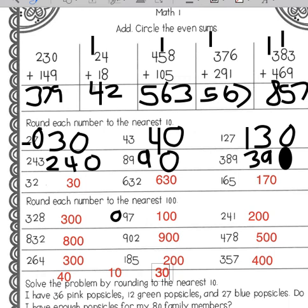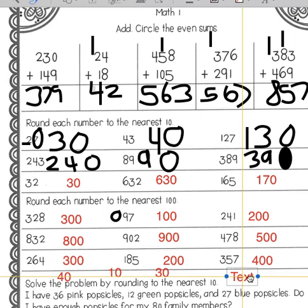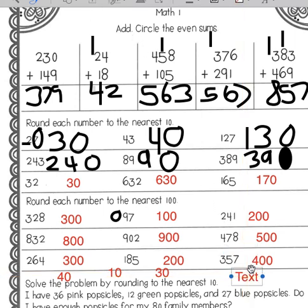It wants to know if we have enough for 80 family members, so I need to add this up. Forty plus ten would be fifty, fifty plus thirty would be eighty. So I would have exactly enough for my 80 family members — the answer is yes.